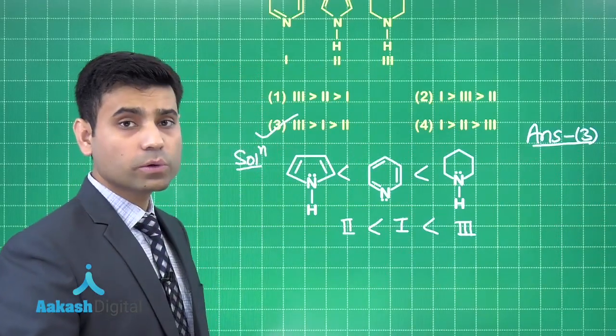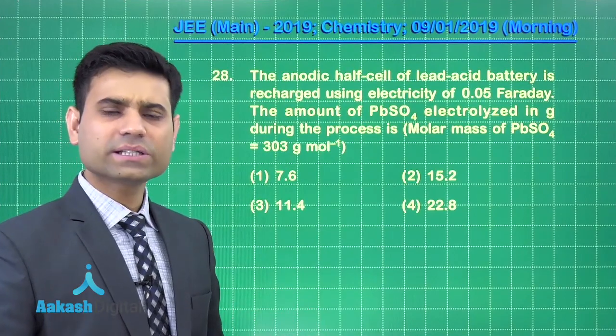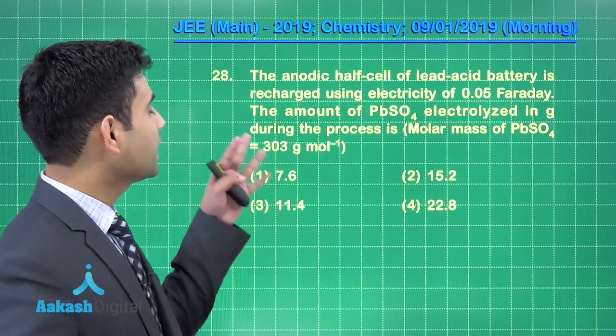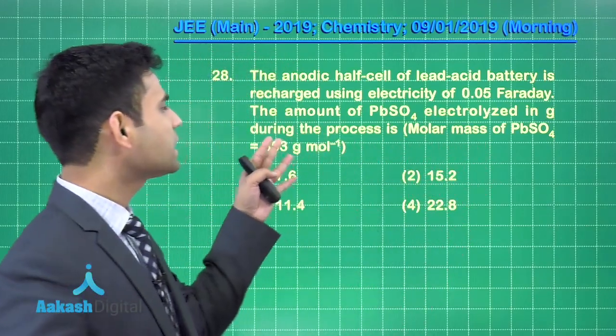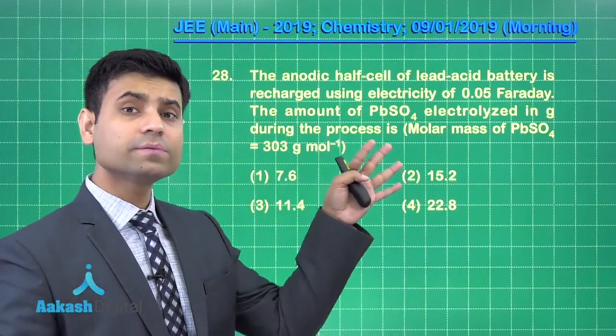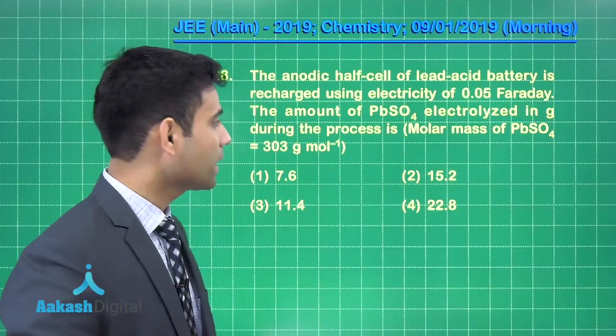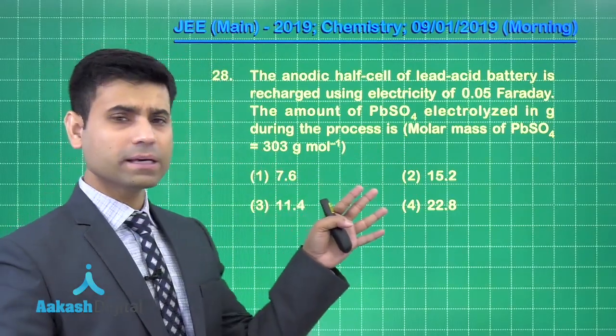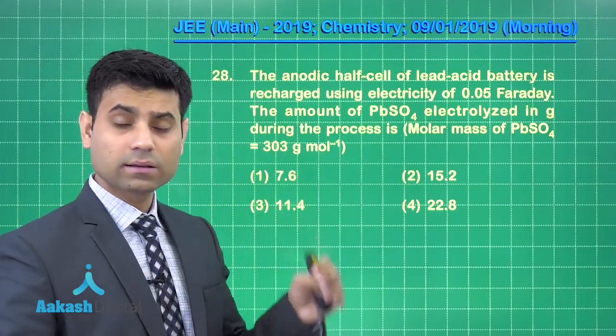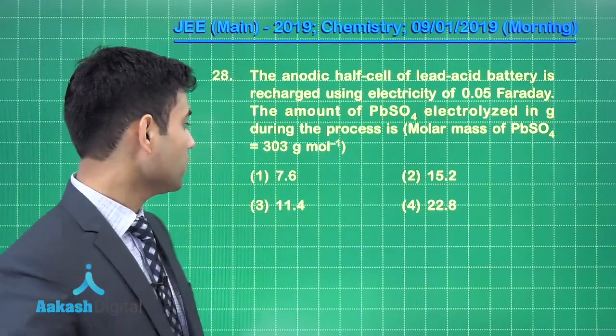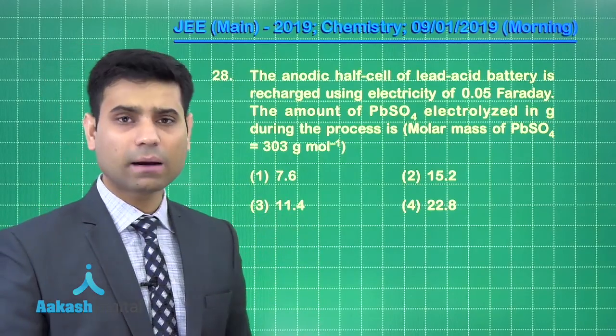Now, let us move to the next question. This is the next question we have which says the anodic half cell of lead acid battery is recharged using electricity of 0.05 faraday. The amount of PbSO4 electrolyzed in gram during the process is (Molar mass of PbSO4 = 303 g mol^-1).